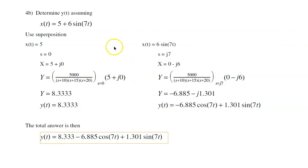If you have two inputs, use superposition. If the input is 5, this is the gain everywhere. All I care about is what's the gain at DC, at S equals 0, times the input. The phasor representation of 5 is just 5. Multiply them out, I get 8.33. So the output at DC is 8.33.